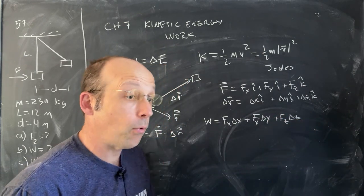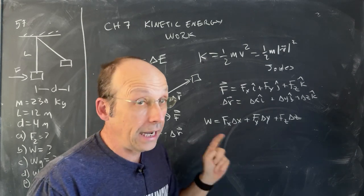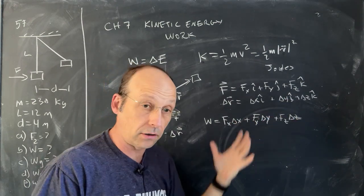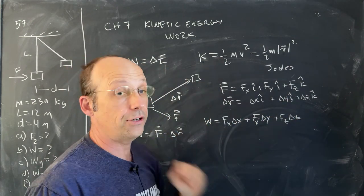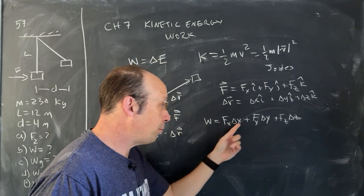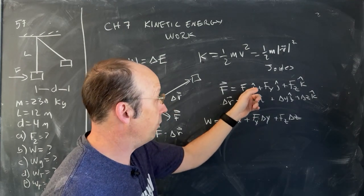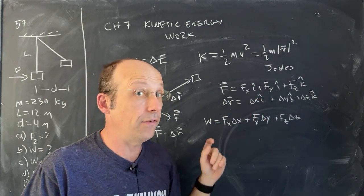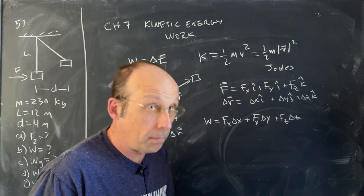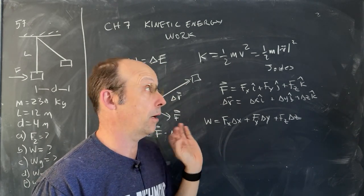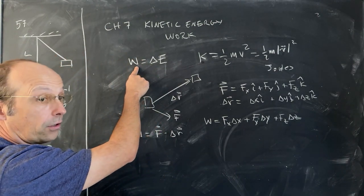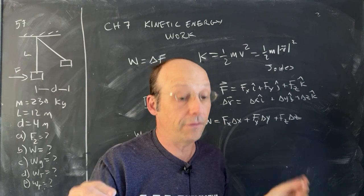And delta R is going to be delta x i-hat plus delta y j-hat plus delta z k-hat. You can move in all those different directions. When I take the dot product, I take the component, the x components, multiply them together, plus the y components, multiply them together, plus the z's, multiply them together. So I get work would be Fx delta x plus Fy delta y plus Fz delta z. And I want to point out two very important things about that expression. Number one, it's a scalar. Even though that whole thing's a vector and that's a vector, that's a scalar. So the work done is a scalar.